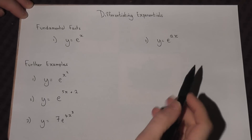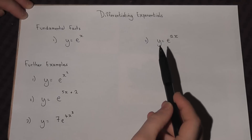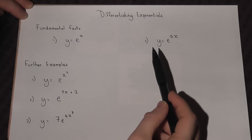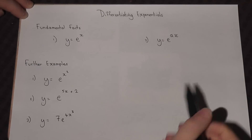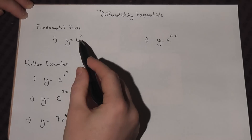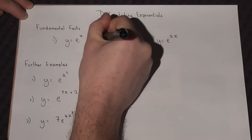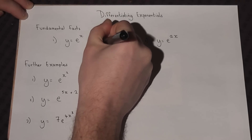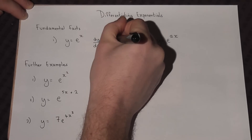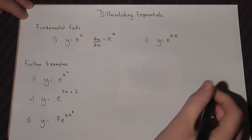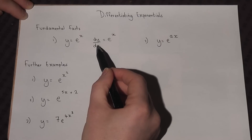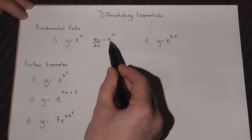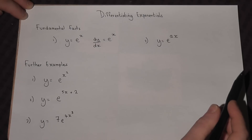This video looks at how to differentiate the exponential function quickly and efficiently. There are two key facts before we do the main harder examples. The exponential graph is such that if we differentiate it, we get the same function. So if y equals e to the power of x, the gradient at that value x is the same. That's the key fact.